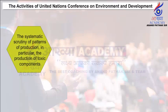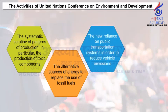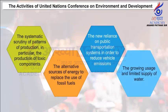The issues discussed at the Earth Summit were: (a) the systematic scrutiny of patterns of production, in particular the production of toxic components; (b) alternative sources of energy to replace the use of fossil fuels; (c) new reliance on public transportation systems in order to reduce vehicle emissions; and (d) the growing usage and limited supply of water.